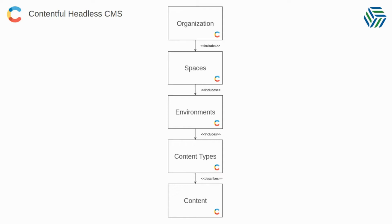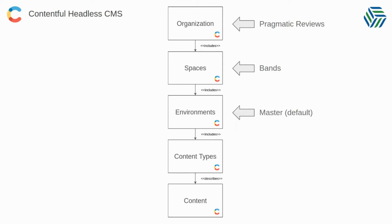Let's see an example based on what we're going to do in this video. We're going to create an organization called Pragmatic Reviews, then create a space named Bands, and we're going to use the default environment that comes with Contentful, which is Master. Then we're going to add a new content type called Band, with fields for an identifier, the name of the band, the genre, and the website.